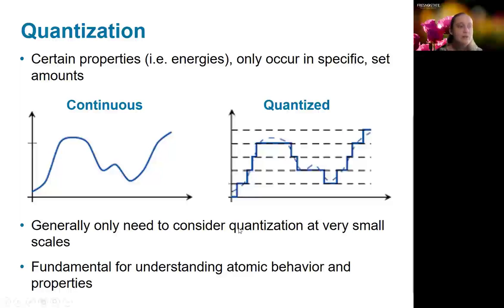That only occur in specific set amounts. So you can think of this as sort of the difference between a continuous function where you can have any value along the y-axis or a quantized function where it has to jump from value to value. And if your required jumps are small enough, it's going to appear basically continuous. So in some limit, quantization is no longer important to consider and we can treat things with classical physics. But at the really small scale, such as we encounter in chemistry with atoms and molecules, this becomes a very important phenomenon.